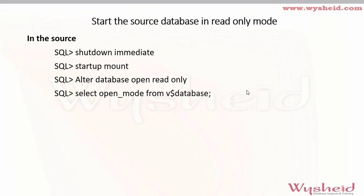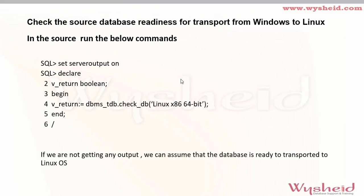If they are in the same endian format, we are good to proceed. The next step is to shut down the source database and open it in read-only mode: shut down, startup mount, then ALTER DATABASE OPEN READ ONLY. Then confirm whether the database is ready to transport using the DBMS_TDB package — specifically the CHECK_DB function, passing the target platform name, for example 'Linux x86 64-bit'.